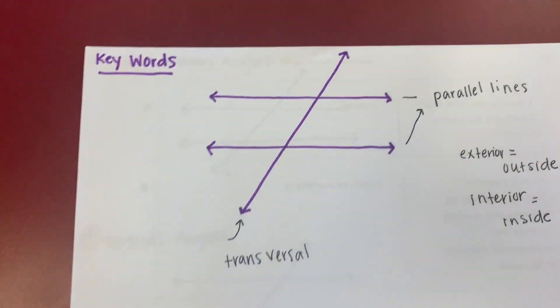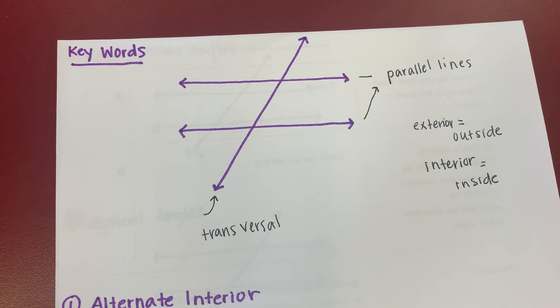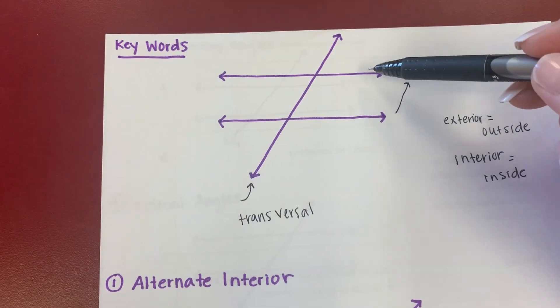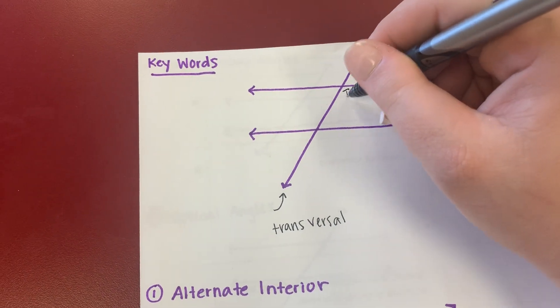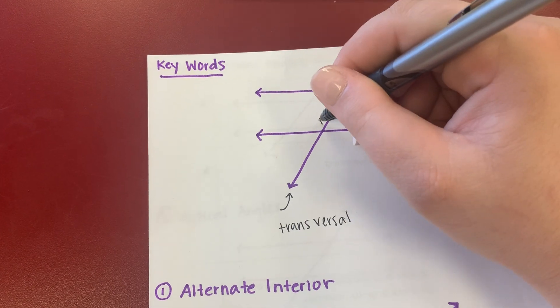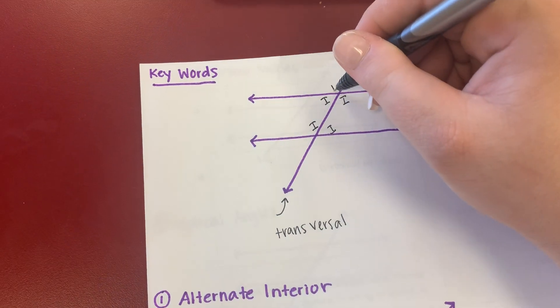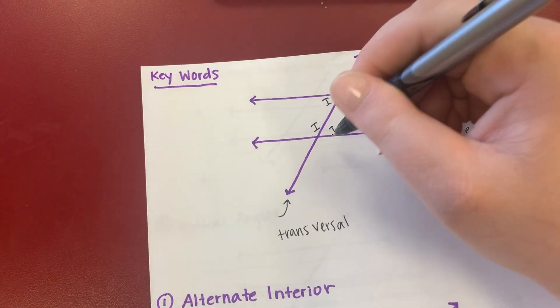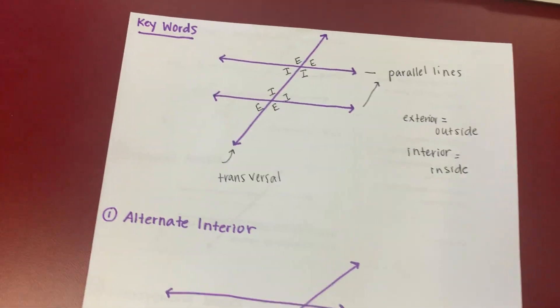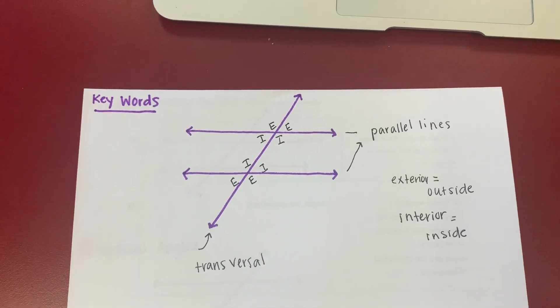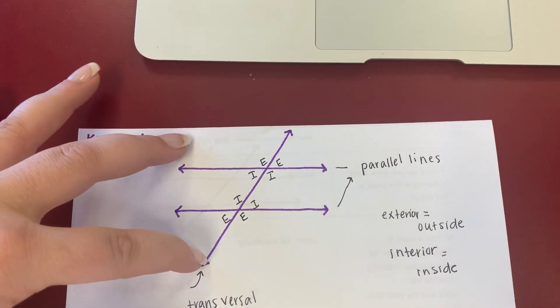So where would that be in the parallel lines cut by transversal? You're looking at what's inside of the boxes with the parallel lines. These are all interior angles because they're inside of the parallel lines. Now outside of the parallel lines is where you're going to find your exterior angles. So when you hear about like alternate interior or alternate exterior, we're looking at inside of the lines or outside of the lines.